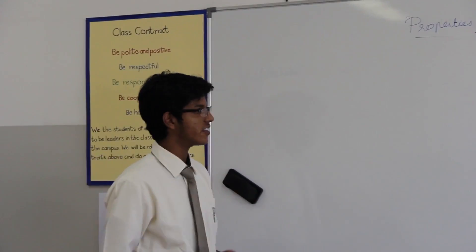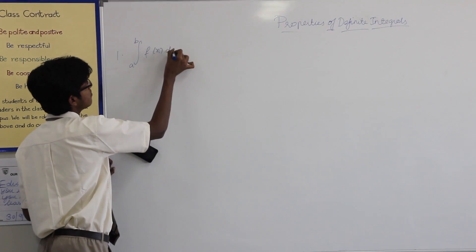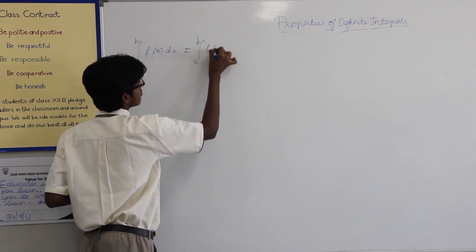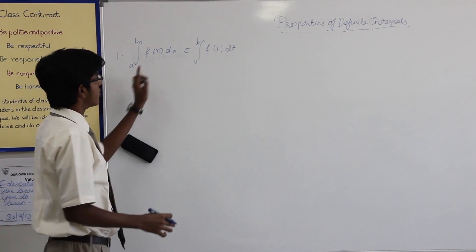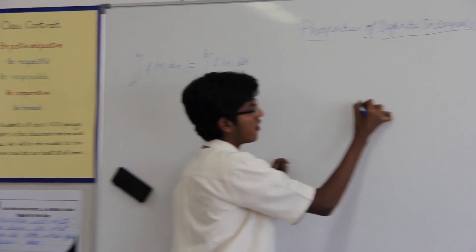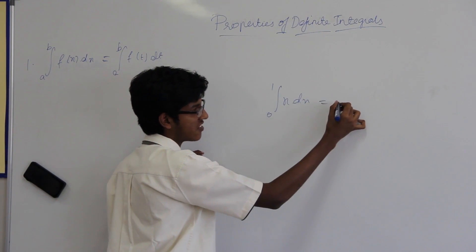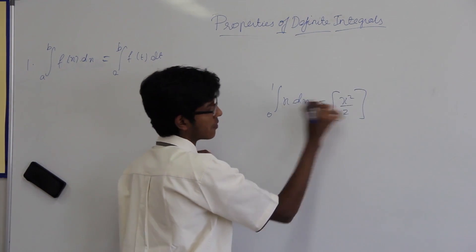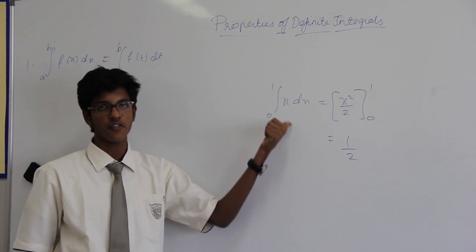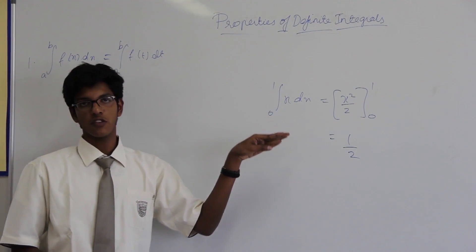The first property we will be dealing with for definite integrals is the following. The integral of f dx from constants a to b is given by the integral from a to b of f of t dt. Here we can see that the variables are immaterial — they do not make any meaningful difference. When we do the integral of x dx from 0 to 1, we get 1/2, an answer independent of the variable. So if you take any other variable like y or t, we get the same answer. That is where the first property comes from.